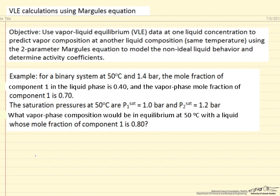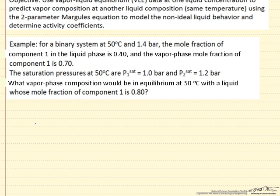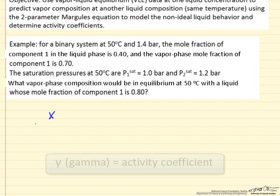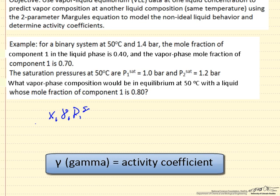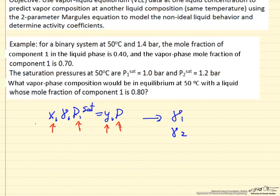The approach we're going to use is to start with the modified Raoult's law and we can write this for both components. In this case we know x1, y1, P1 sat, and pressure, so we're going to be able to determine gamma 1. Likewise we can determine gamma 2 from the equivalent equation for component 2.